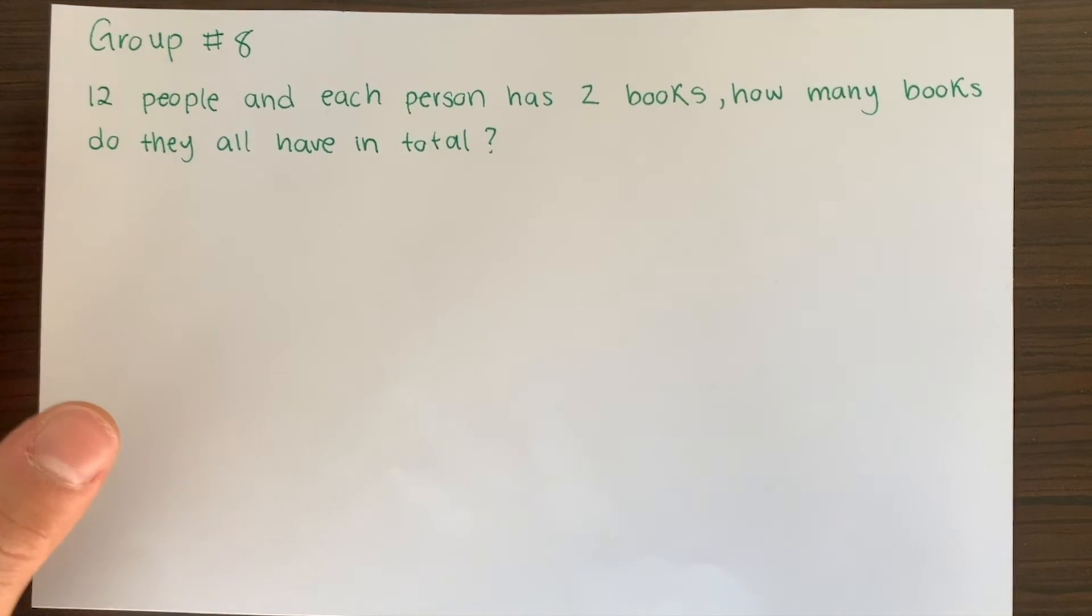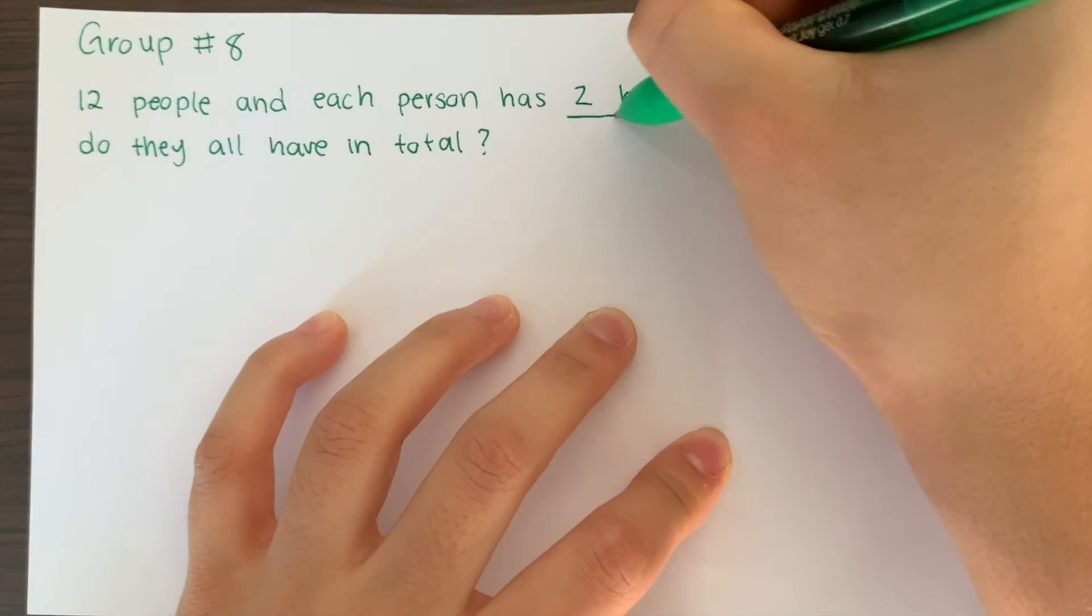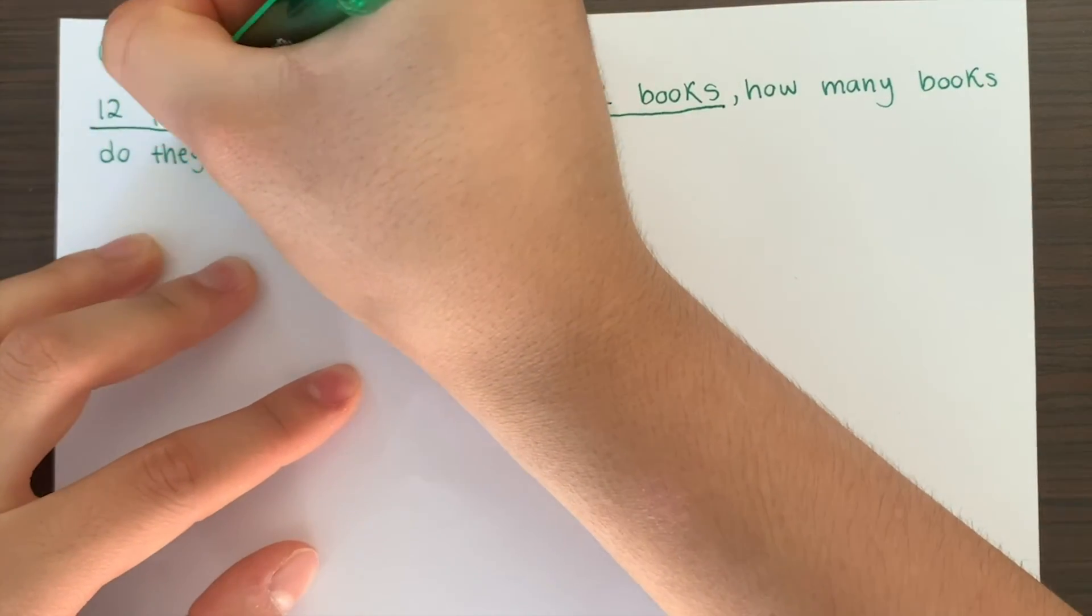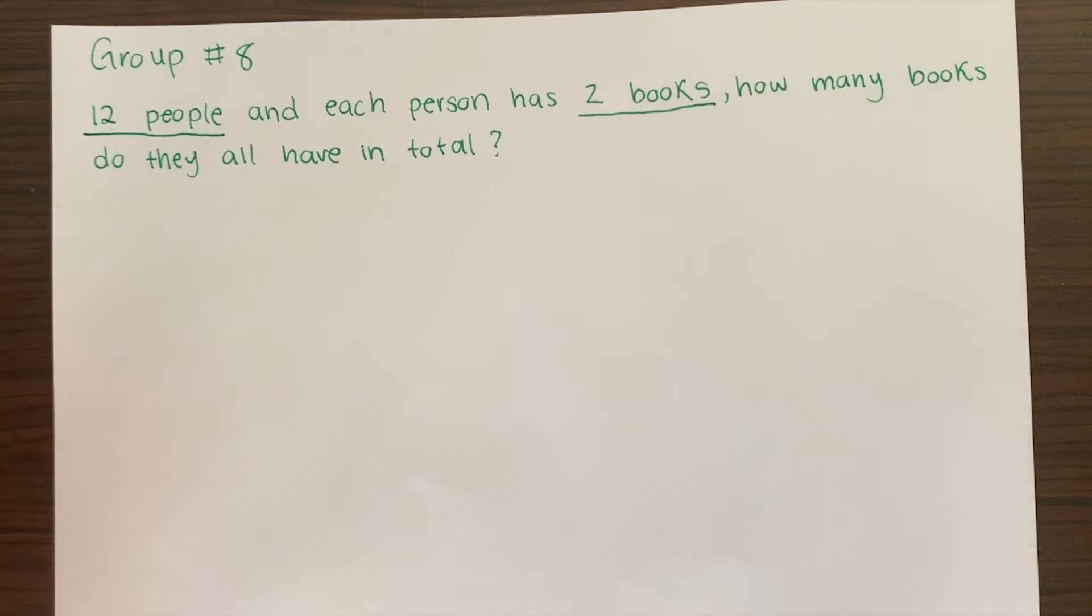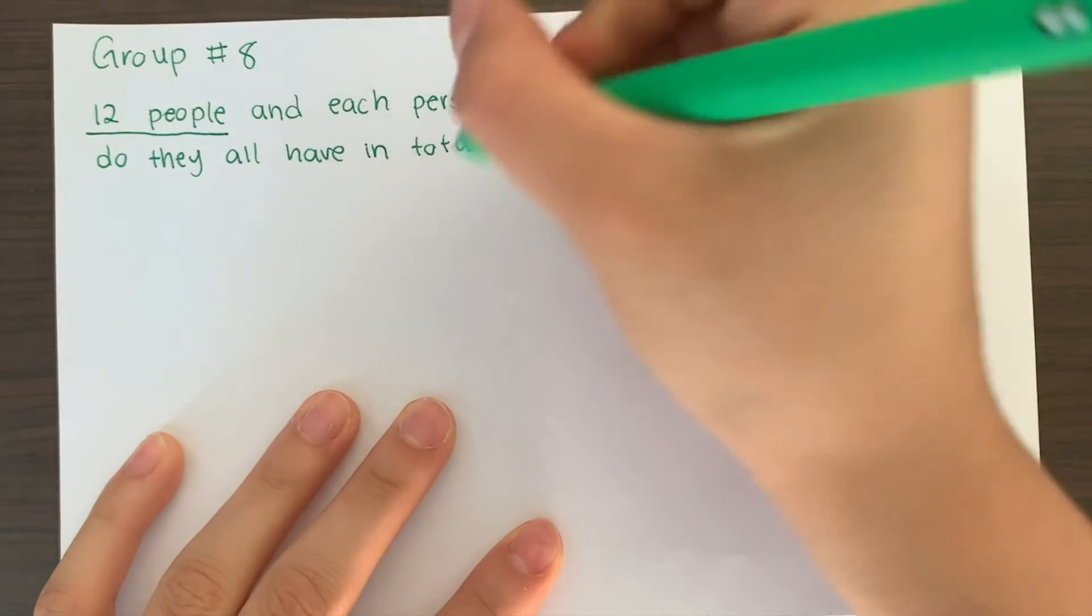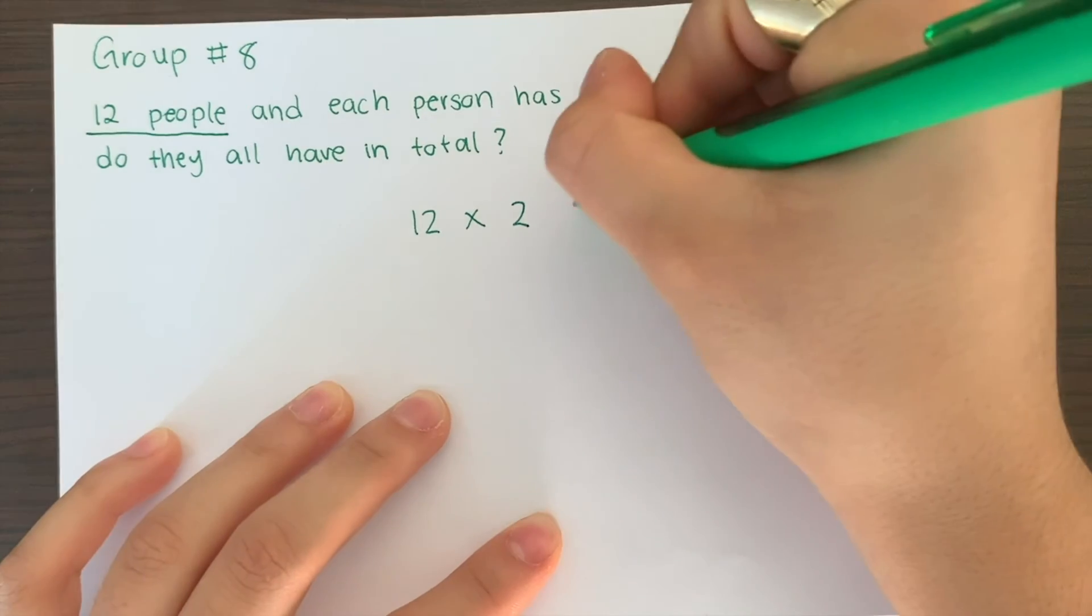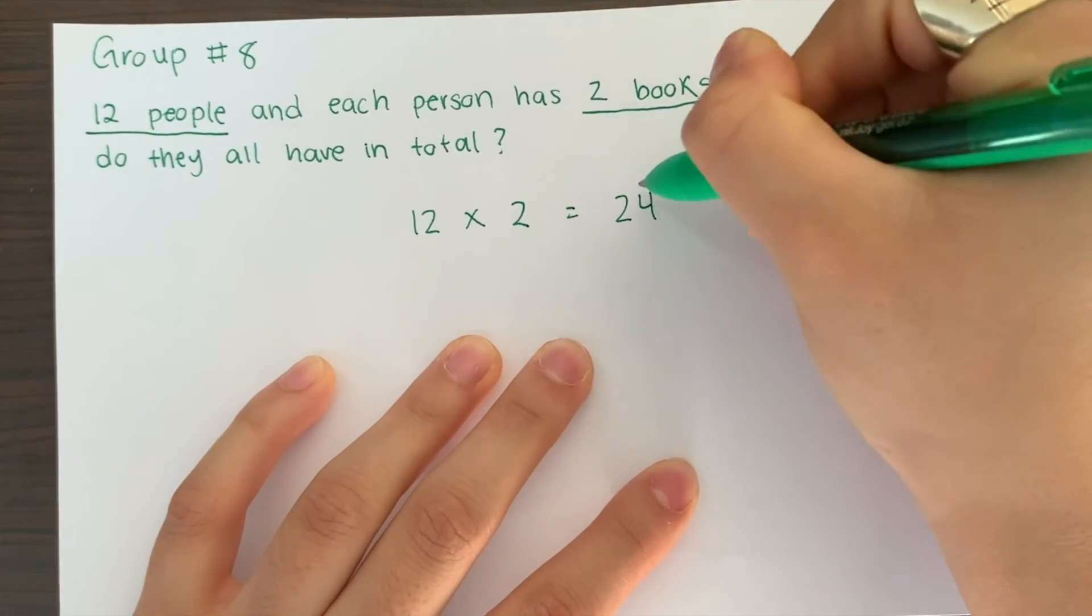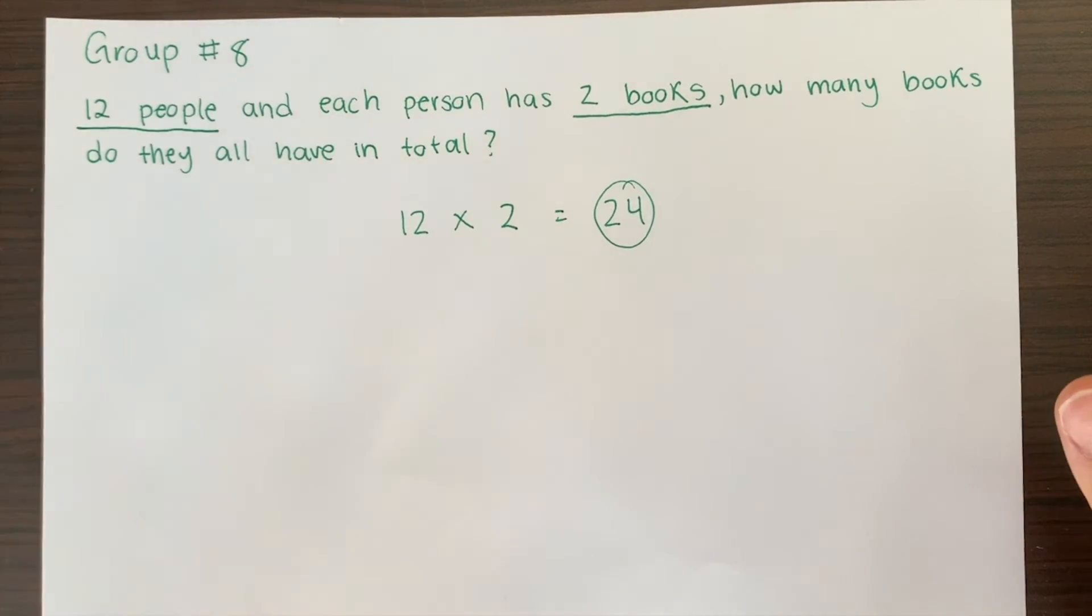Like we did in the others, we're going to go ahead and underline the important information that they give us. In this case, it's two books. That looks important to me. And then how many people we have, which is 12. So we're just going to multiply these two numbers. So 12 multiplied by 2 gives us 24. And that would be how many books you have in total.